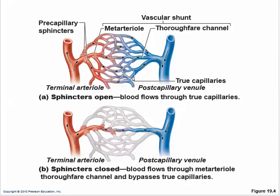The meta-arteriole is the central shunt channel, and the true capillaries branch off it, each with pre-capillary sphincters at its beginning. When the sphincters are open, blood goes through the capillary bed and lots of exchange happens. When the sphincters are closed, blood just passes through the thoroughfare channel, resistance goes way up, and blood is redirected to different capillary beds because of the back pressure.